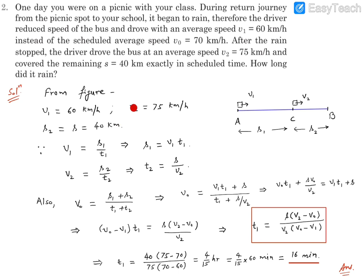s which is 40 km. v2 is 75, v1 is 60 km/h. These all informations are known to us. We need to find the time taken by the bus to go from A to C. So let's call this time as t1, this time taken as t2. We can apply the